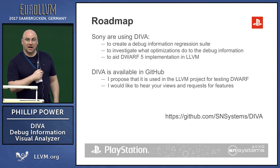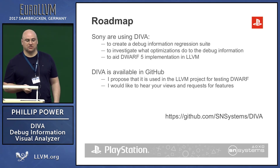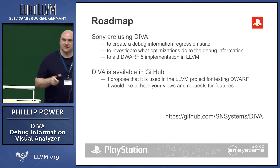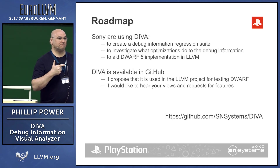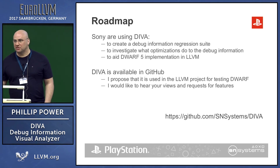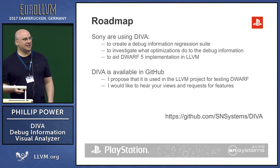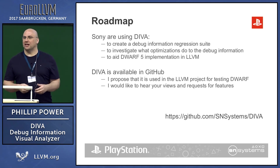Today I've put the binaries of Diva onto GitHub. The Windows version is there today; the Linux version will hopefully be there by the end of the week. I would be really grateful if you download it, give your opinions, and any feature requests, because I think this will be really valuable to help the debug information in the compiler, and hopefully in the near future we'll be contributing this to the LLVM project itself.